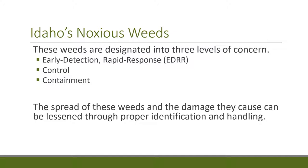Weeds come in different levels of concern. The first are those early in their invasion — still in small populations — where the key is to detect them and quickly respond, hopefully eradicating them. These are called EDRR species: Early Detection, Rapid Response. Once a weed is more established, control is the effort. And finally, some plants are so widespread they're on the third level: containment — trying to stop the spread at the edges rather than fully controlling them within an area.